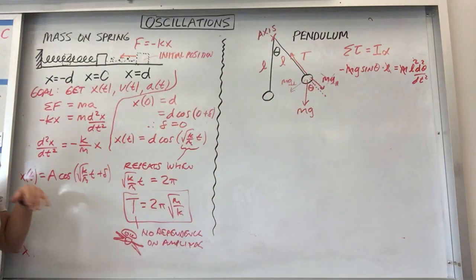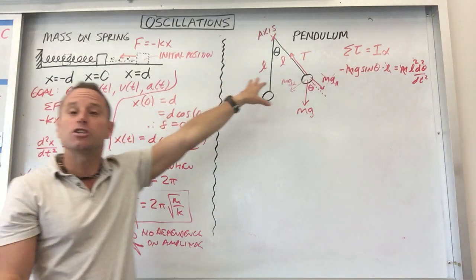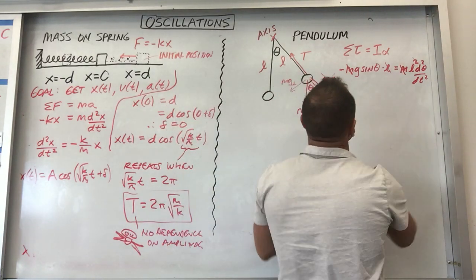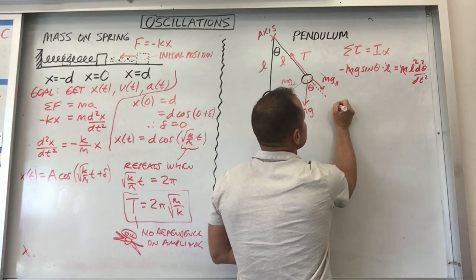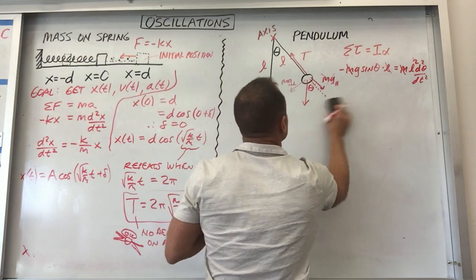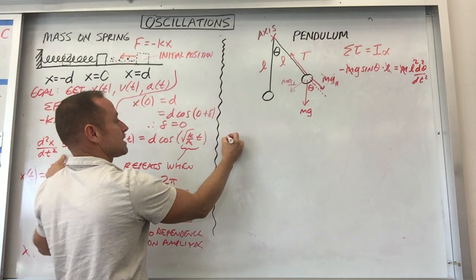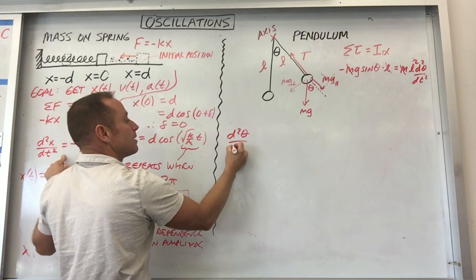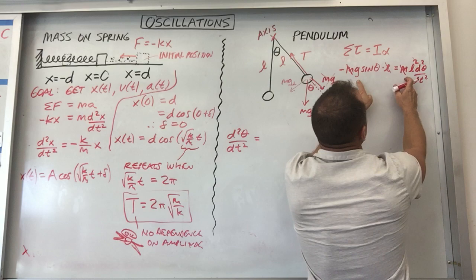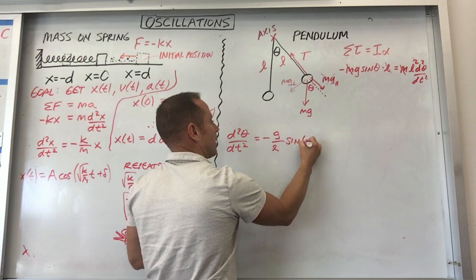That's something that's different from the mass on the spring. Here the motion was dependent on the mass. With the pendulum, the motion is not going to be dependent on the point mass that you put here. So that's going to cancel out. And so, just rearranging that a bit. As a matter of fact, I'm going to write it over here so it looks just like what we had at this stage last time with the mass in the spring. d squared theta by dt squared equals minus G over L sine theta.